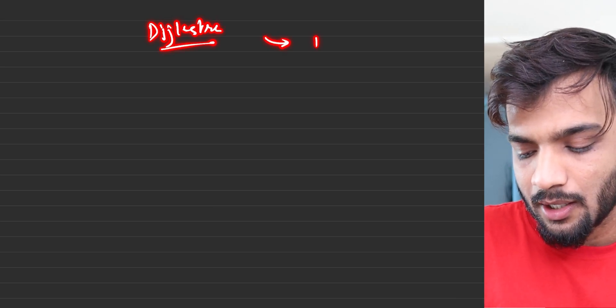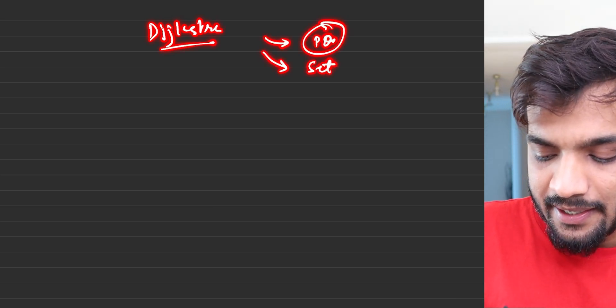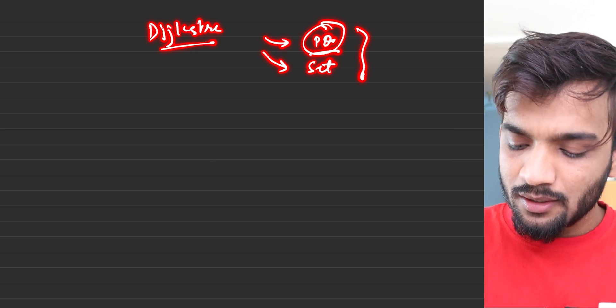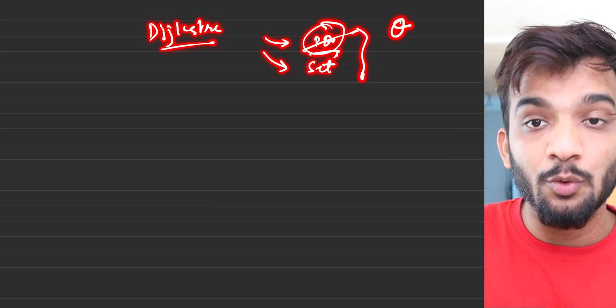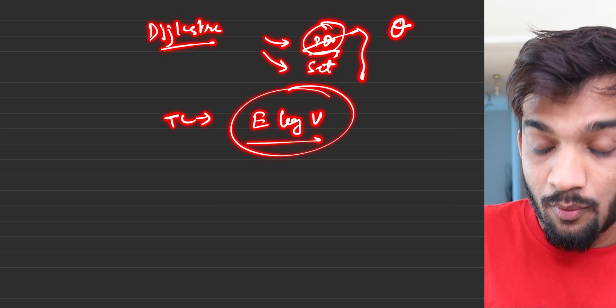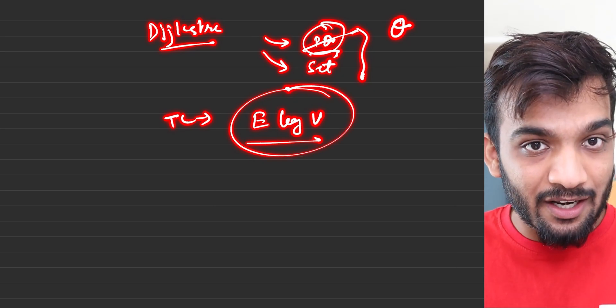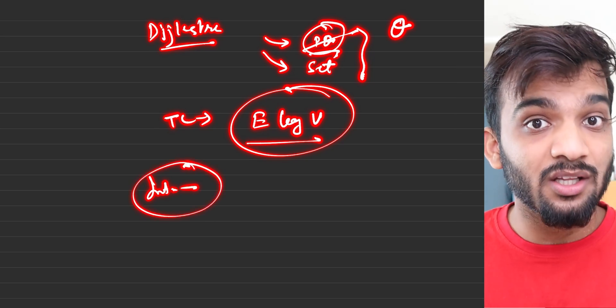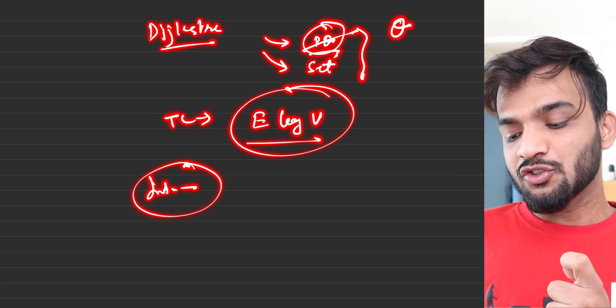Hey everyone, welcome back to the channel. In the previous couple of videos we learned about Dijkstra's algorithm, solved it using a priority queue and a set data structure. There were questions like: why a priority queue when a regular queue also works, what is the time complexity E log V and its derivation, and what is the intuition behind Dijkstra's algorithm. I'll discuss all three points in this video.